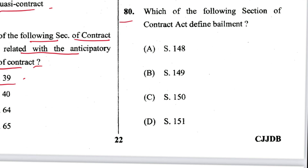Question 80: Which section of the Contract Act defines bailment? Section 148. A is the answer.